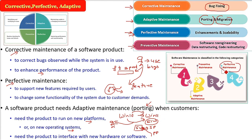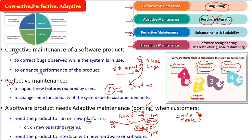Preventive maintenance is about making the code and design such that problems cannot even happen. In corrective maintenance, the fire has already happened and you fight it. But in preventive maintenance, you code and design in a way so that the maintenance activity should be as minimal as possible. Preventive maintenance is all about software re-engineering, data restructuring, and code restructuring.